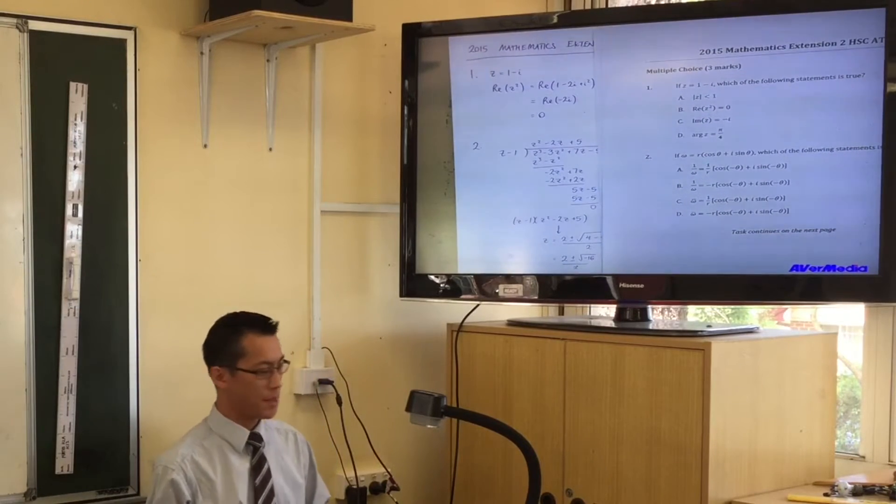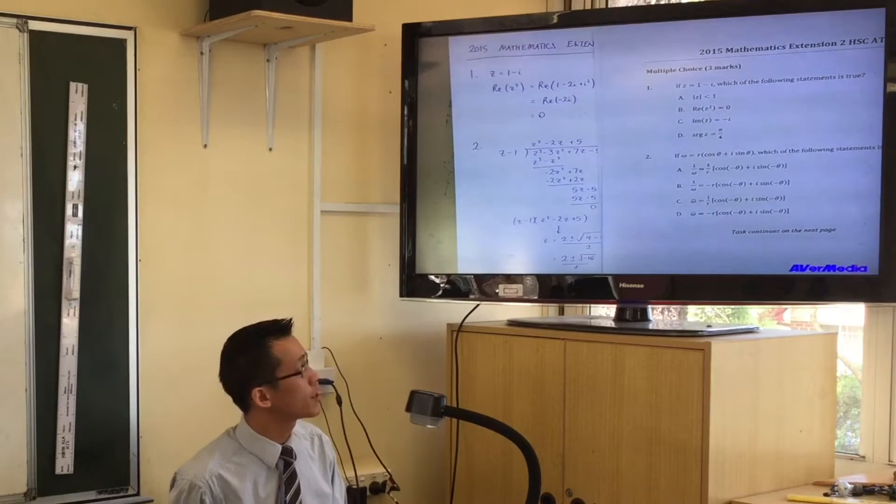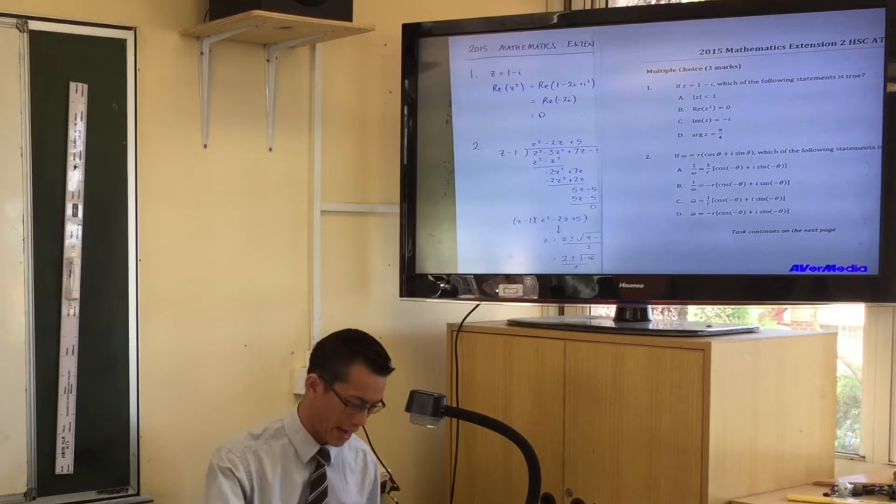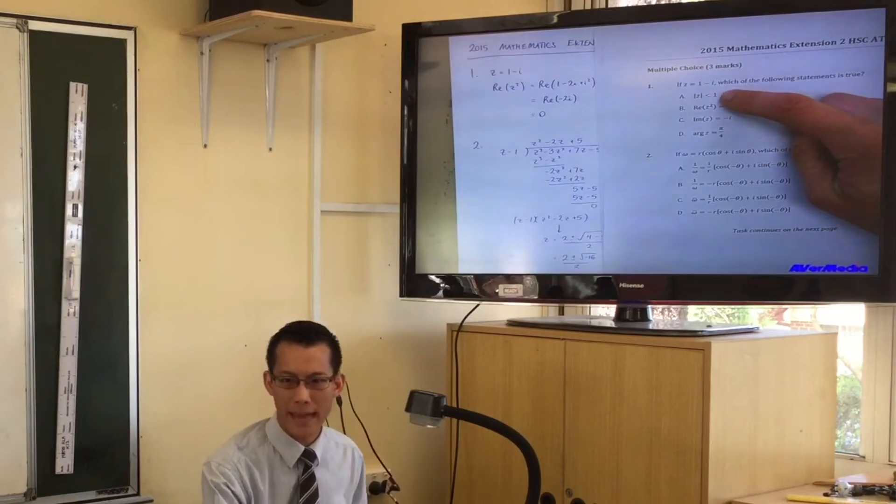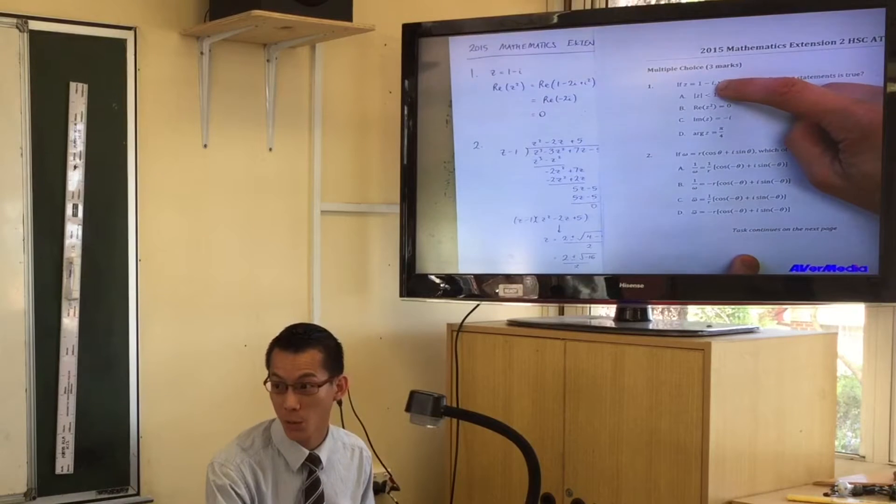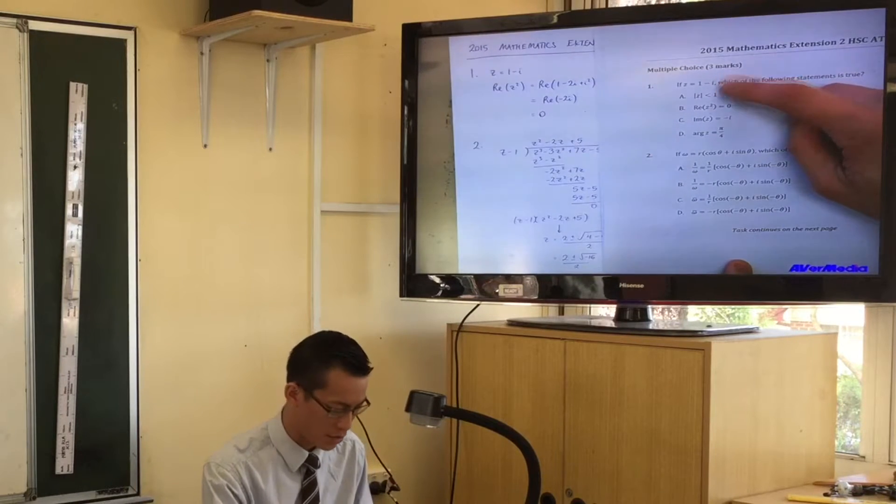Now, just to refresh your memory, if z equals one minus i, which of the following statements is true? Most people quickly worked out it can't be A because the modulus of z is root two. So that's out.